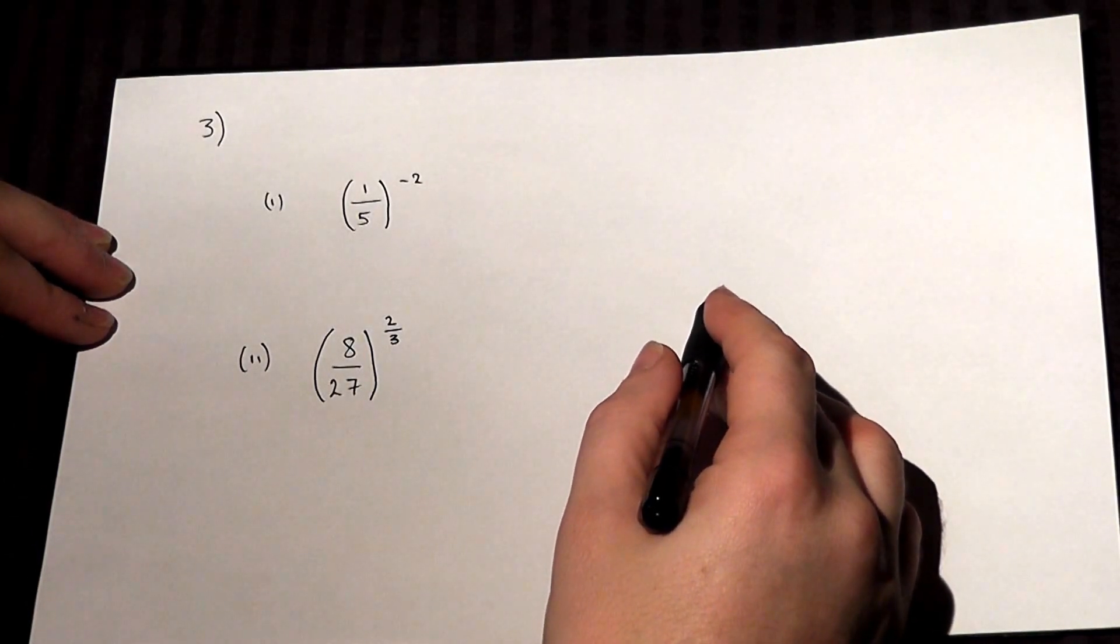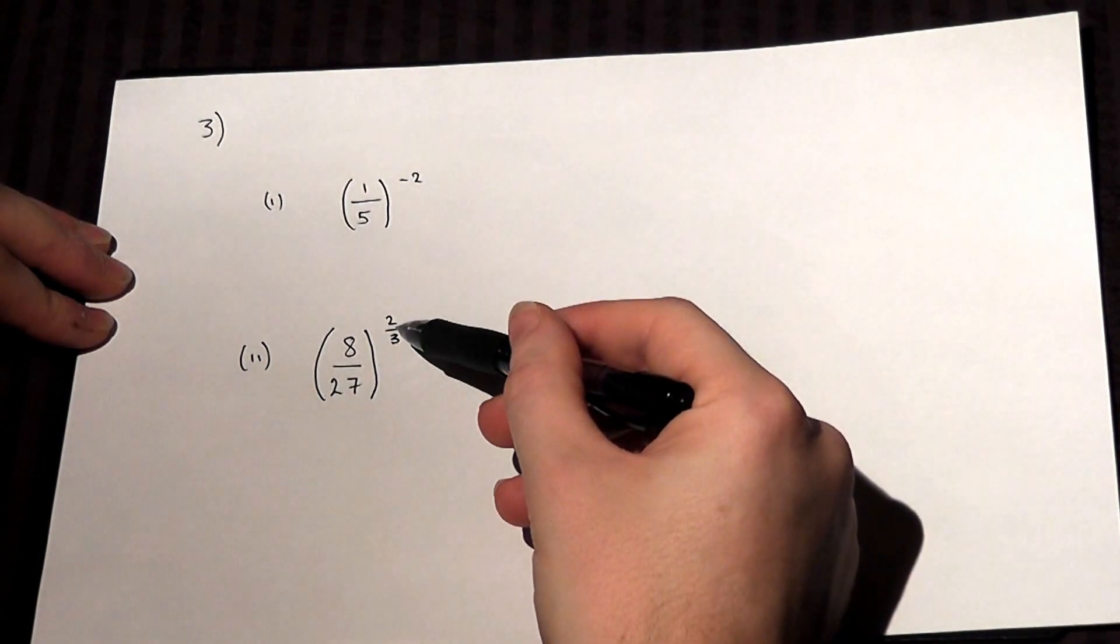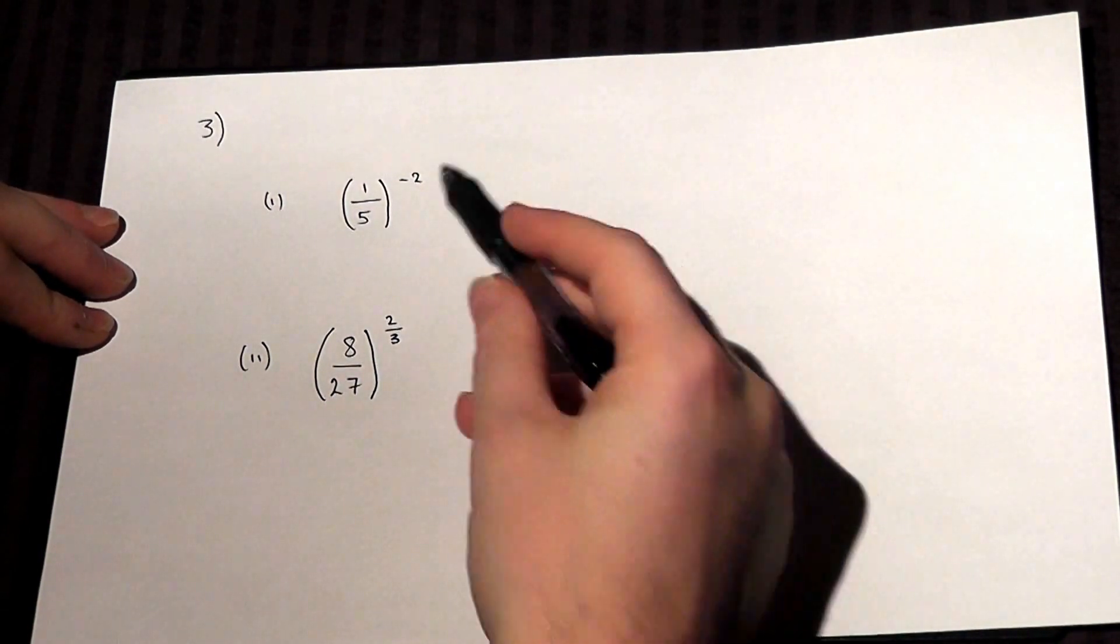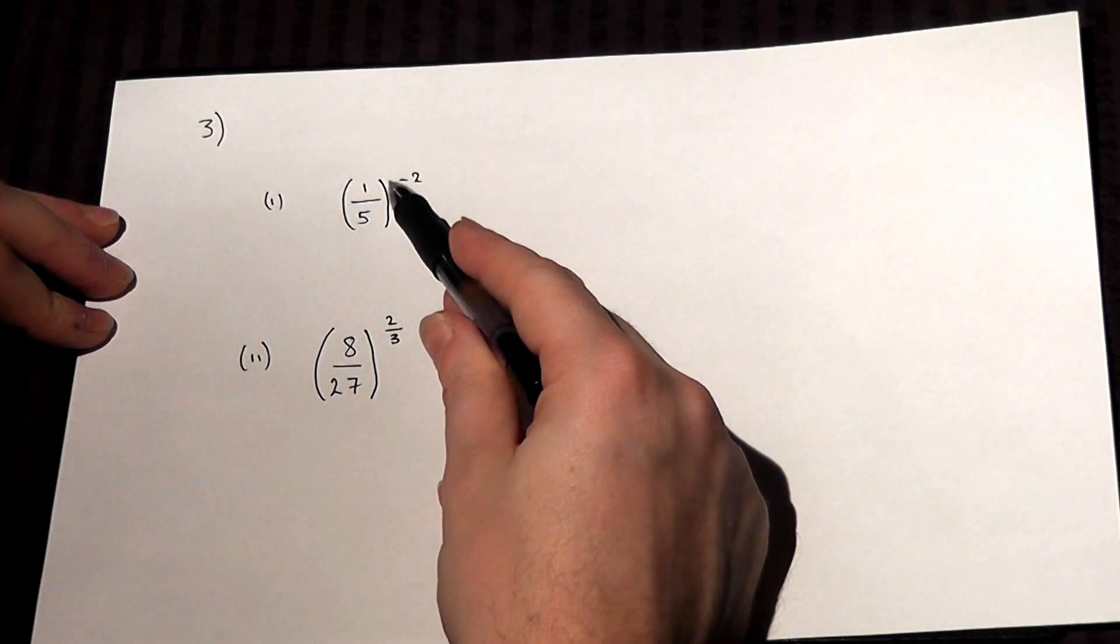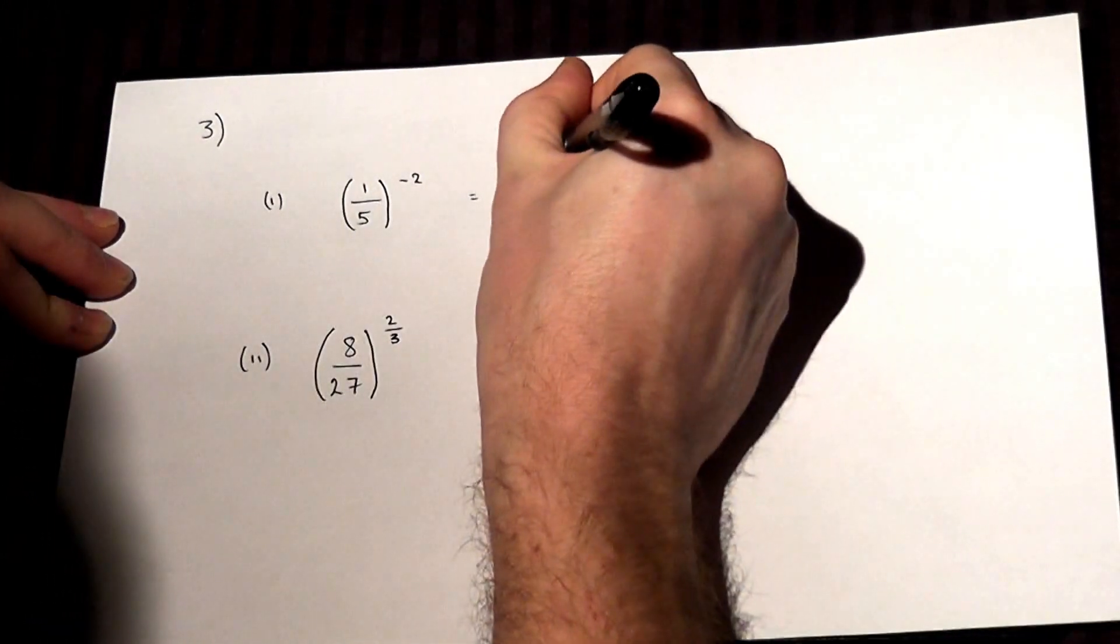This question asks us to work out two expressions involving a negative and a fractional power. In part (i), a negative power means reciprocate the part in the bracket, so (1/5)^-2 equals 5